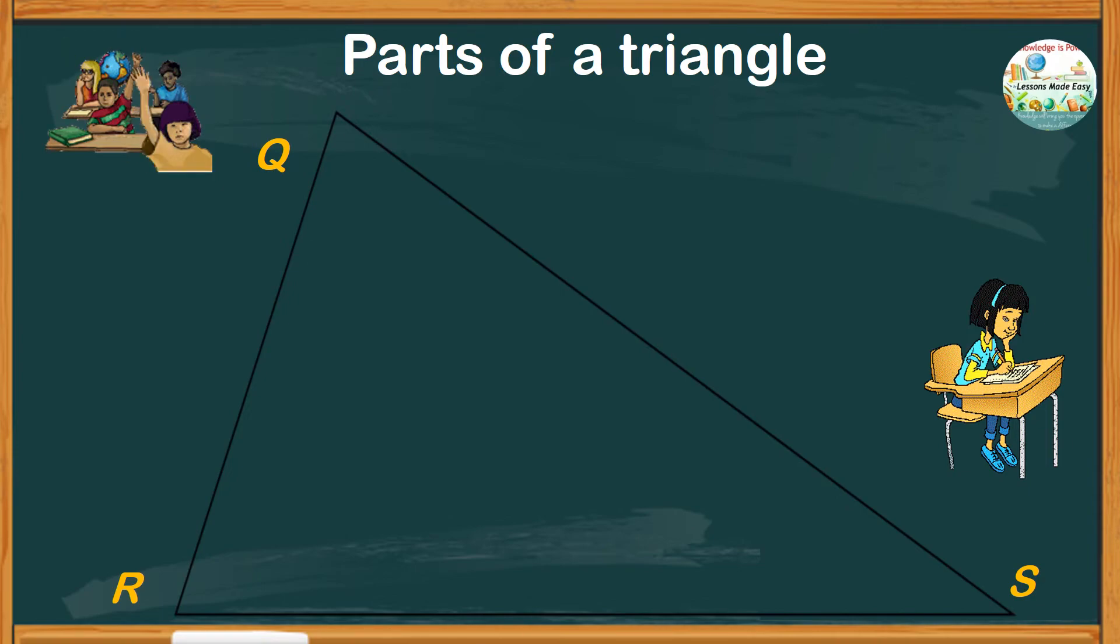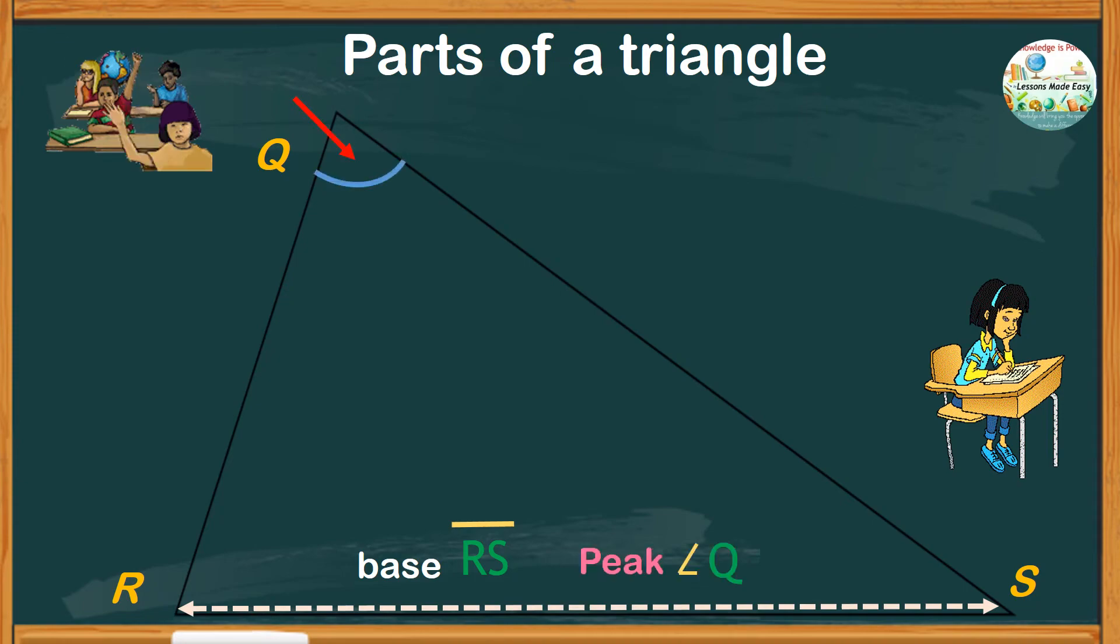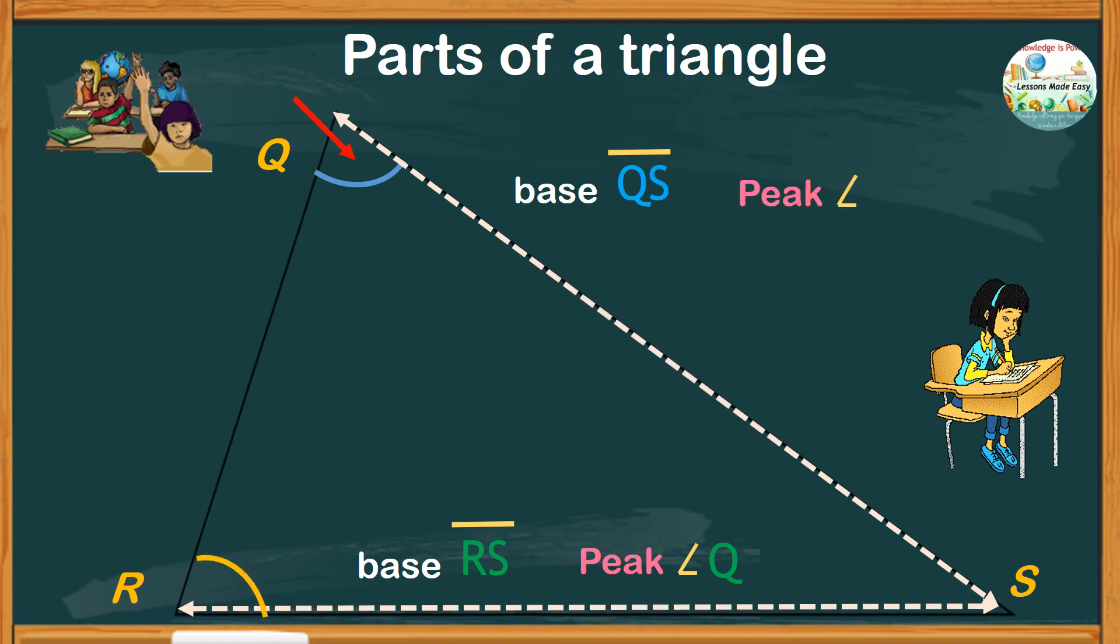If the base is line segment QS, then the peak is angle R. And if the base is line segment QR, then the peak is angle S.